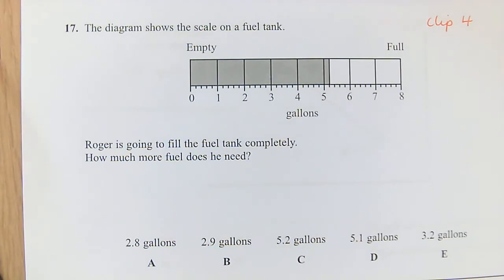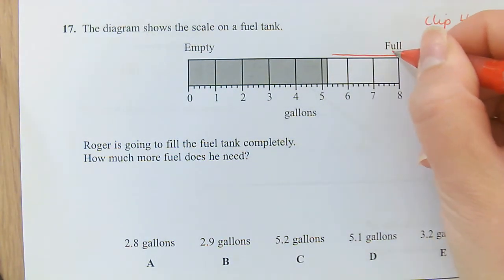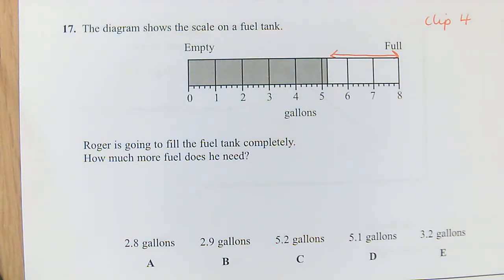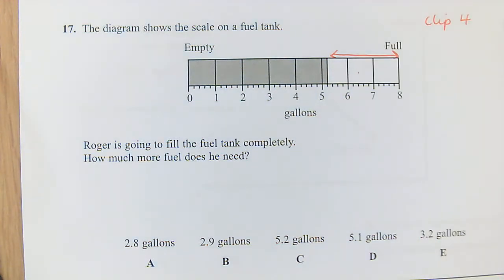Question 17: We've got a fuel tank there. We're just going to fill the fuel tank completely. How much more fuel does he need? So here we're looking at what is this distance on the scale. So here we've definitely got one gallon, two gallons, we've got 2.8 gallons.